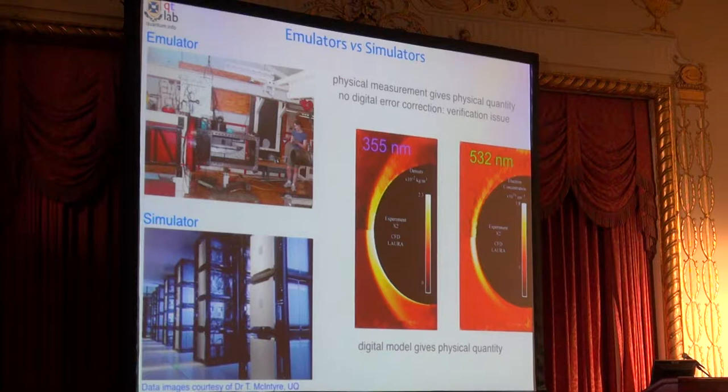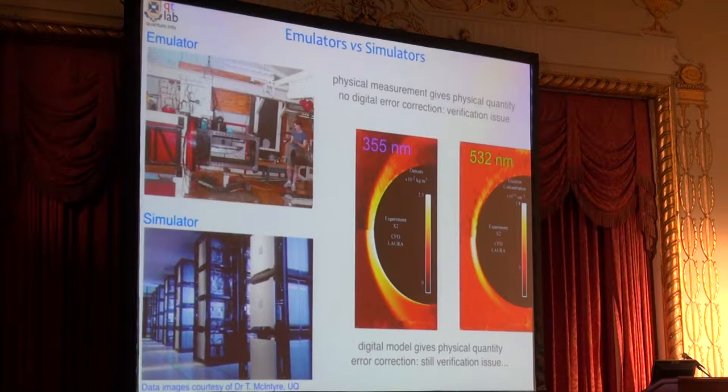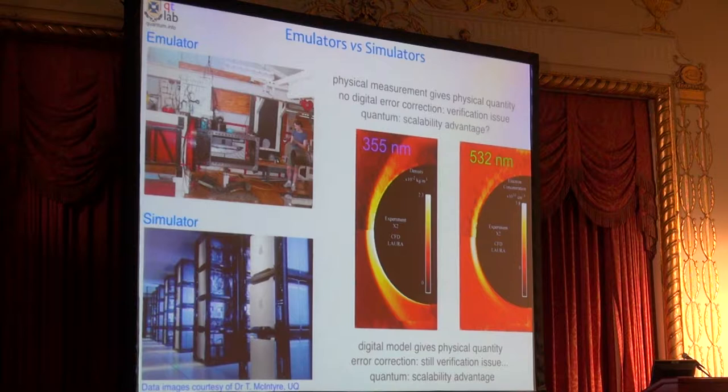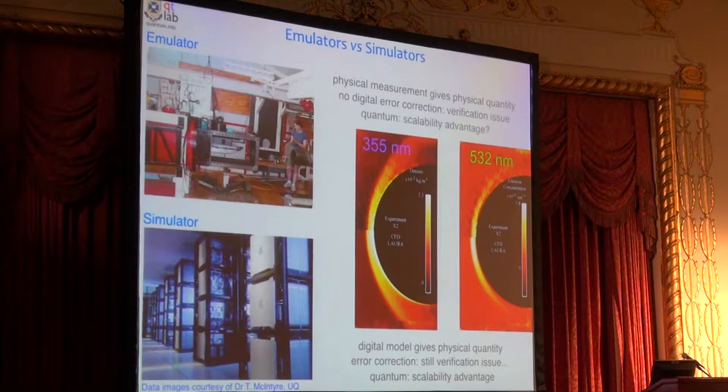That's true in classical physics. It will be true in quantum physics. There's no digital error correction for your emulator, which is why you've got this verification issue. You do have error correction, of course, in your digital model. But there's still a verification issue. Did you pick the right Hamiltonian to program in? You've got to compare that to experiment, which ties back to that last question of Alain's. In the quantum regime, it's known that there's a scalability advantage for simulators. For emulators, that's something of an open question.